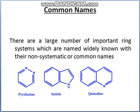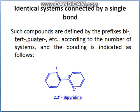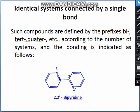Next is common name. There are a large number of important ring systems which are widely named with their non-systematic, or common, names — like indole, pyrimidine. Identical systems connected by a single bond are defined by prefixes like bi or quad according to the number of systems and the bond. For example, where a double bond exists at positions one and two in both cycles, at the two-two position we have a double bond, so it is 2,2'-bipyridine.